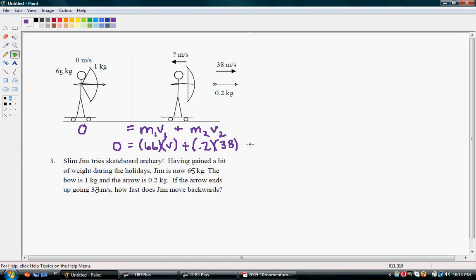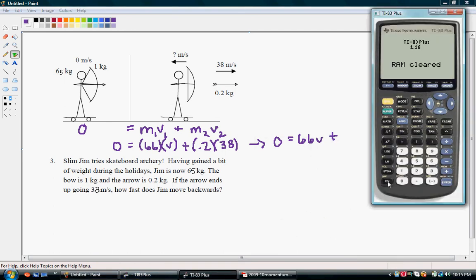So we end up with 0 equals 66V plus, and then we want to do 0.2, 0.2 times 38.